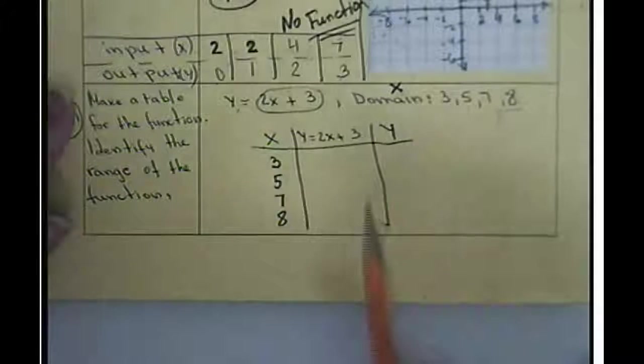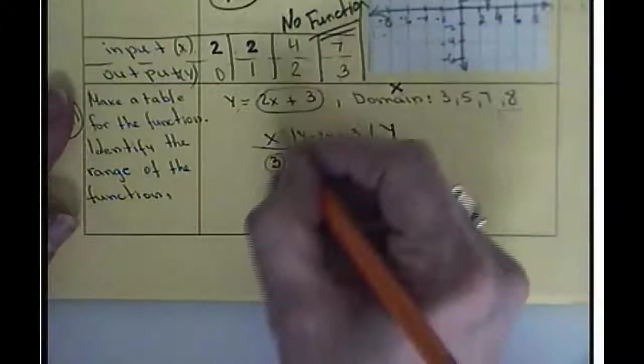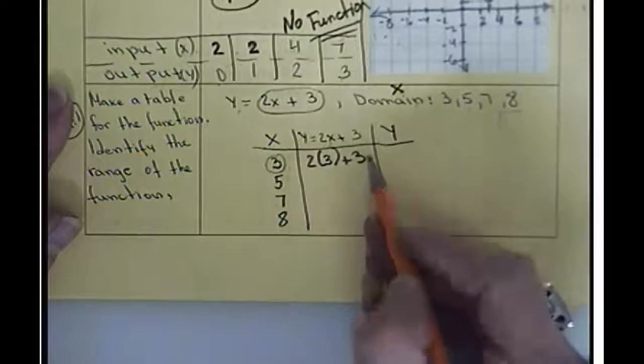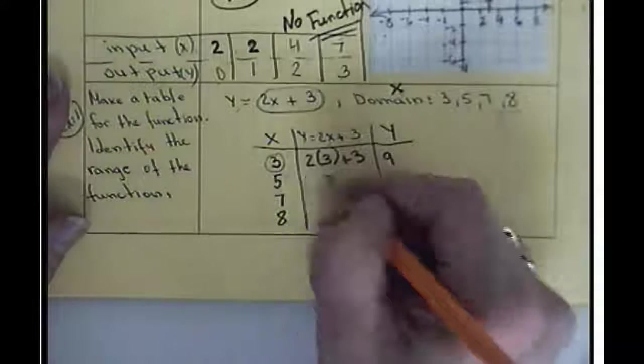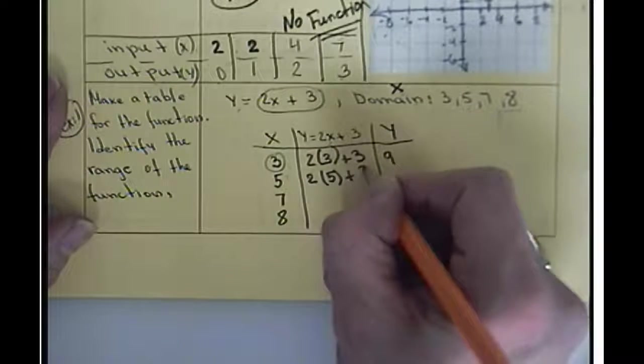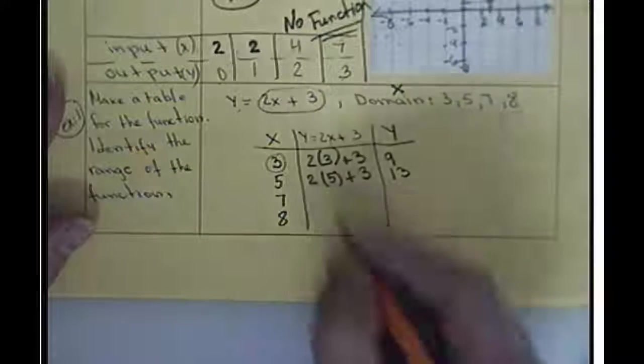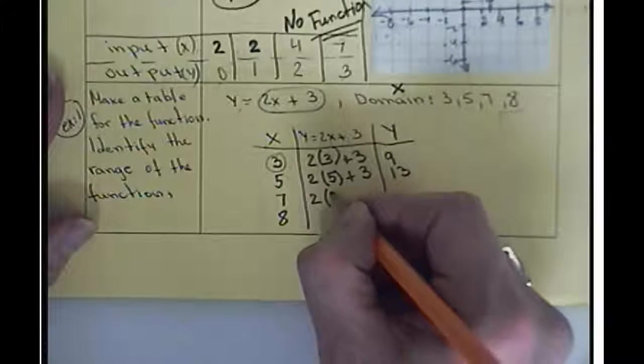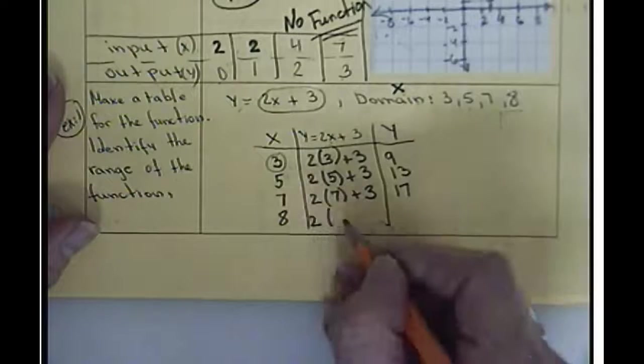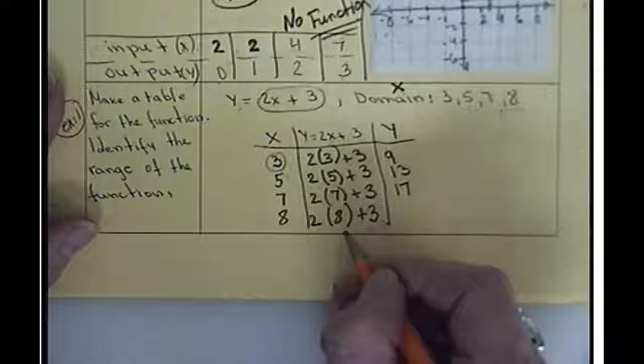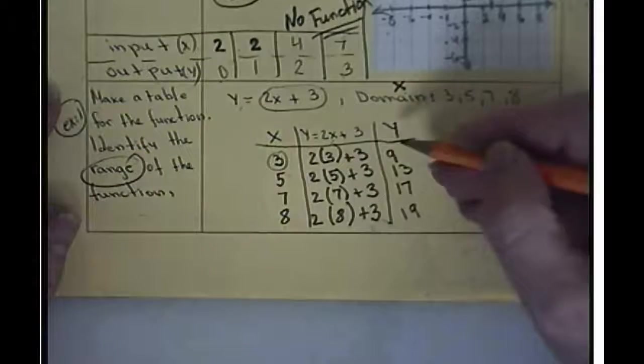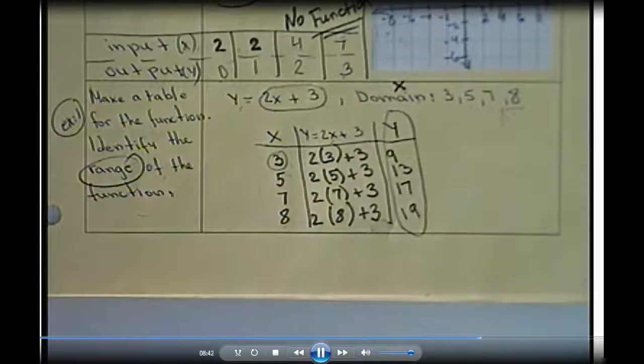To get y values, we will substitute x in the function. So we'll be 2 times, instead of x, we put number 3 here, and then plus 3. So 2 times 3 is 6, plus 3 will give us 9. y will be 9. Then the second one, we are using exactly the same function, 2 times, instead of x, put number 5, plus 3. 2 times 5 is 10, plus 3, we get 13. Next one will be 2 times, now instead of x, we put 7, plus 3. 2 times 7, 14, plus 3 will be 17. And the last one, 2 times 8, and again plus 3. 2 times 8 is 16, plus 3, 19. So to identify the range of the function, it means this. We just got what the range is equal to, and we're done with the example.